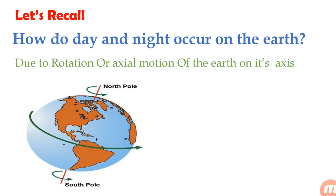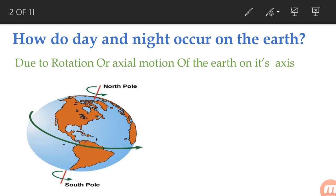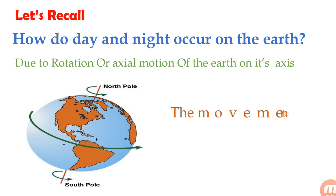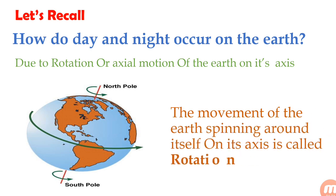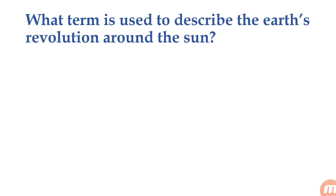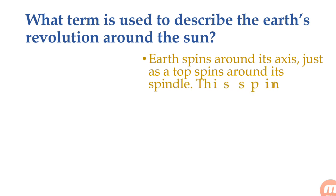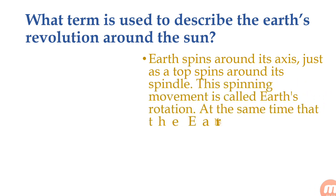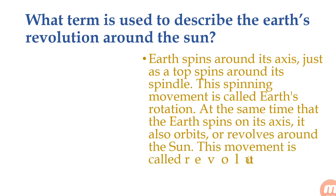You can see a green line which shows rotation — it rotates itself only. The movement of the earth spinning around itself on its axis is called rotation. Earth spins around its axis just as a top spins around its spindle. This spinning movement is called earth rotation.